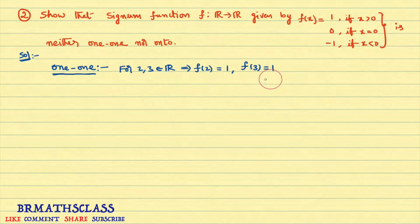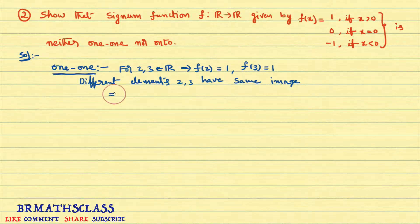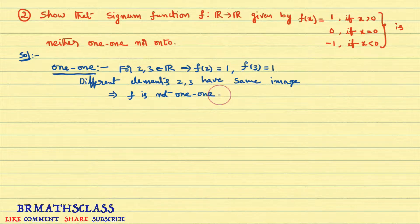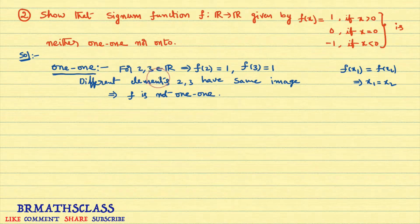Remember, when the function is not one-one, only then do we give such a counter example. When the function is one-one, you have to write the solution very carefully using the procedure: assume f(x1) = f(x2), simplify to prove x1 = x2. Different elements 2 and 3 have the same image, so f is not one-one.